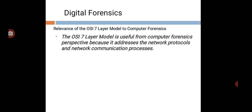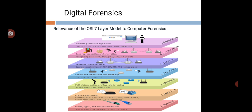We will discuss these seven layers and how they are relevant to digital forensics or computer forensics in detail. The seven layers are: physical layer, data link layer, network layer, transport layer, session layer, presentation layer, and application layer.